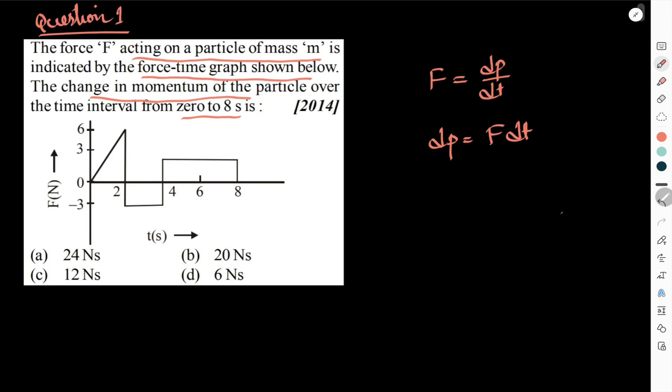So if you look at this figure, you have a triangle, square and rectangle. So area of triangle first, so it will be half into base into height. So base is 0 to 2, so 2 is the base and height is 6 Newtons.